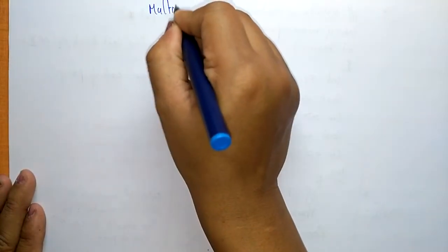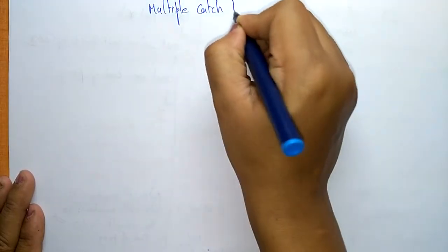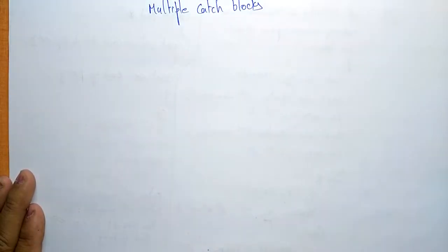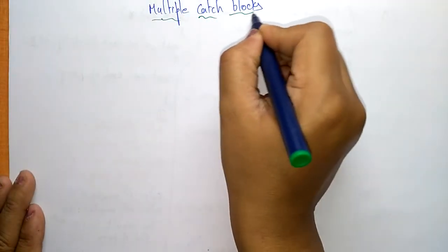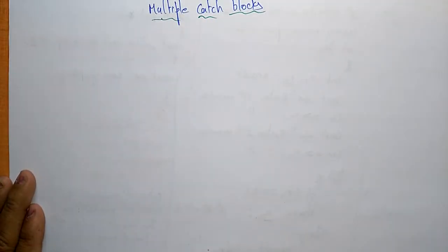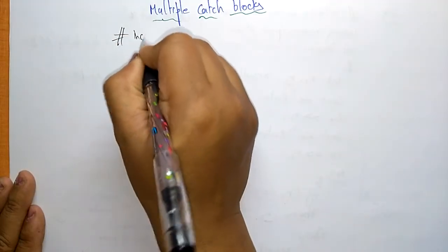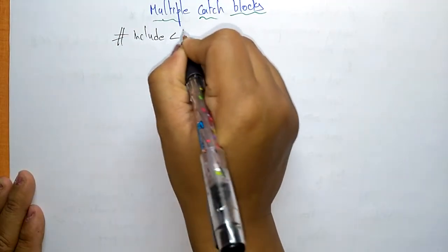Now let us see multiple catch blocks. The try block contains only one block, but you can write multiple catch blocks in the same program to handle different types of exceptions. Let us see a program demonstrating how to handle multiple catch blocks. #include <iostream>.